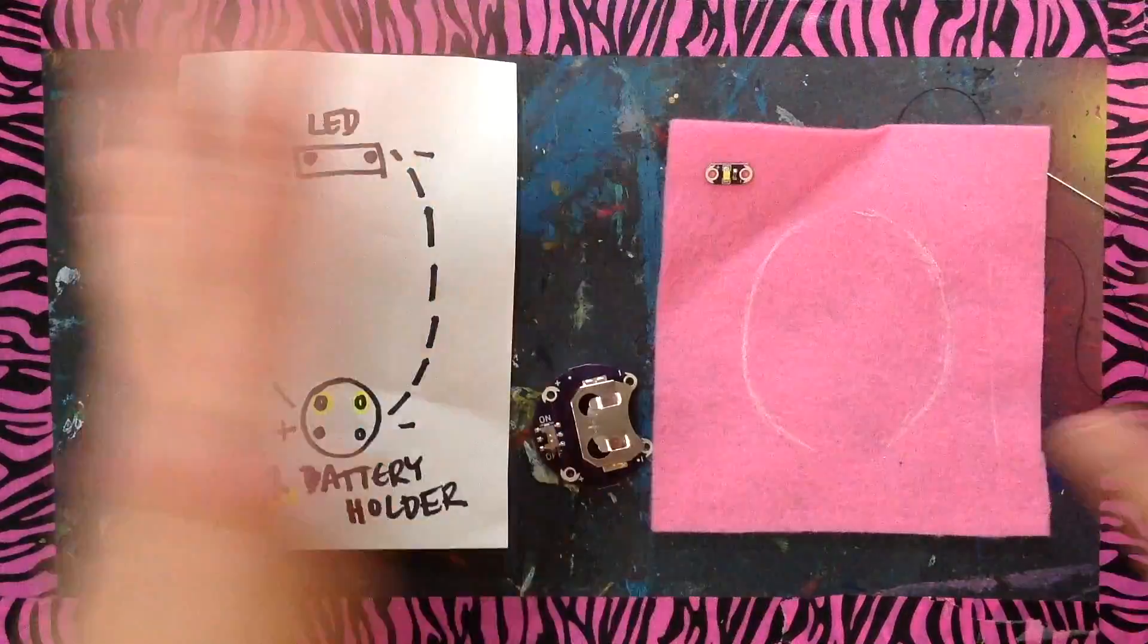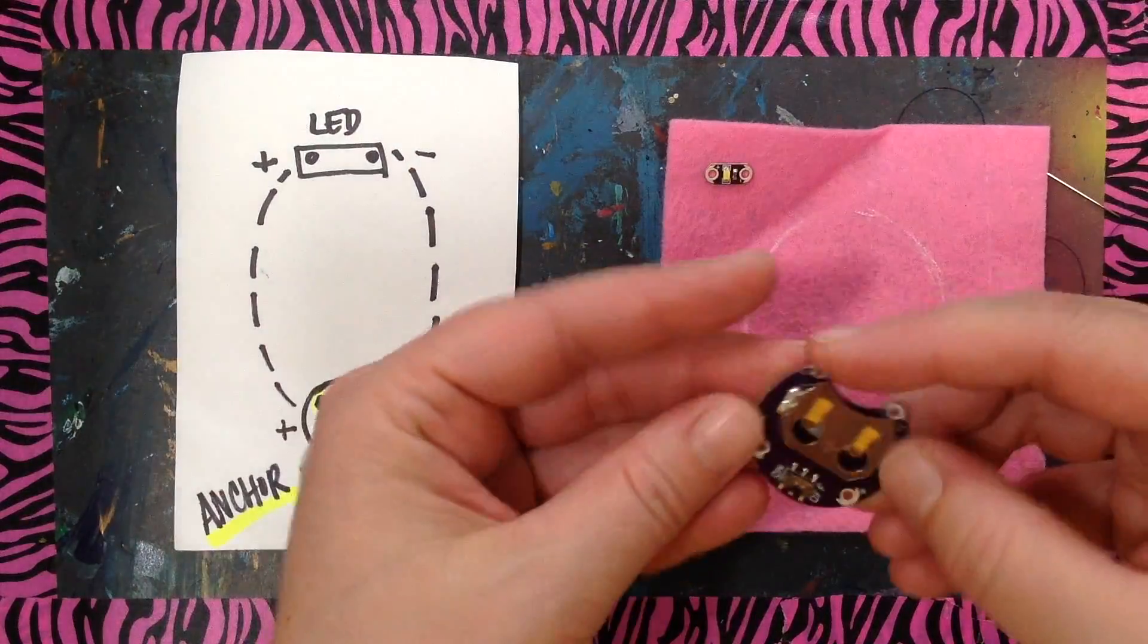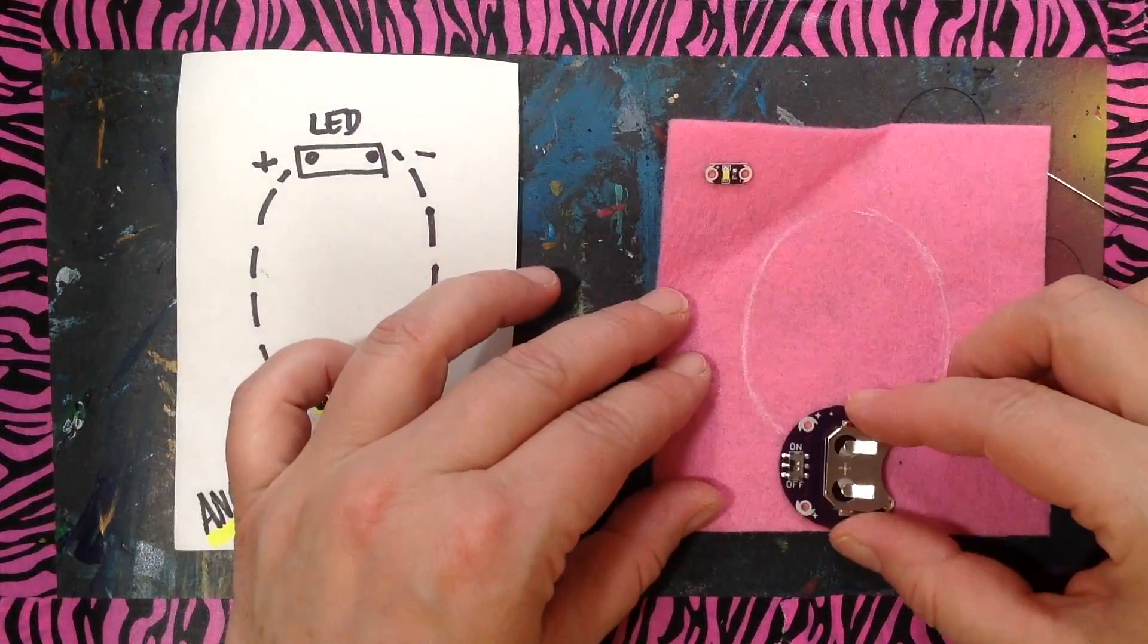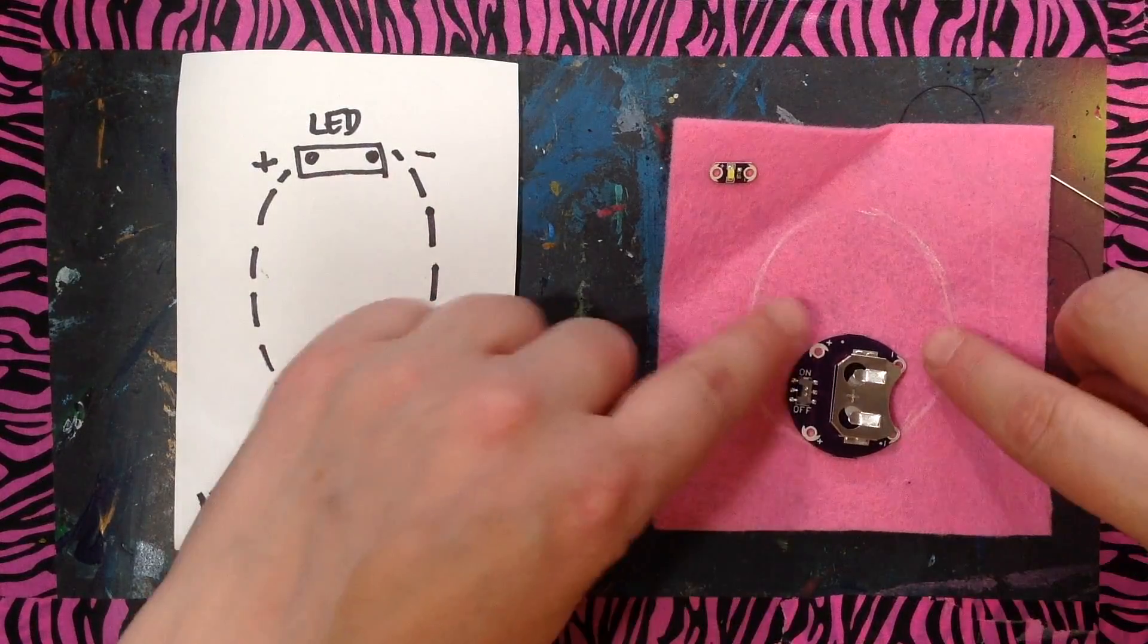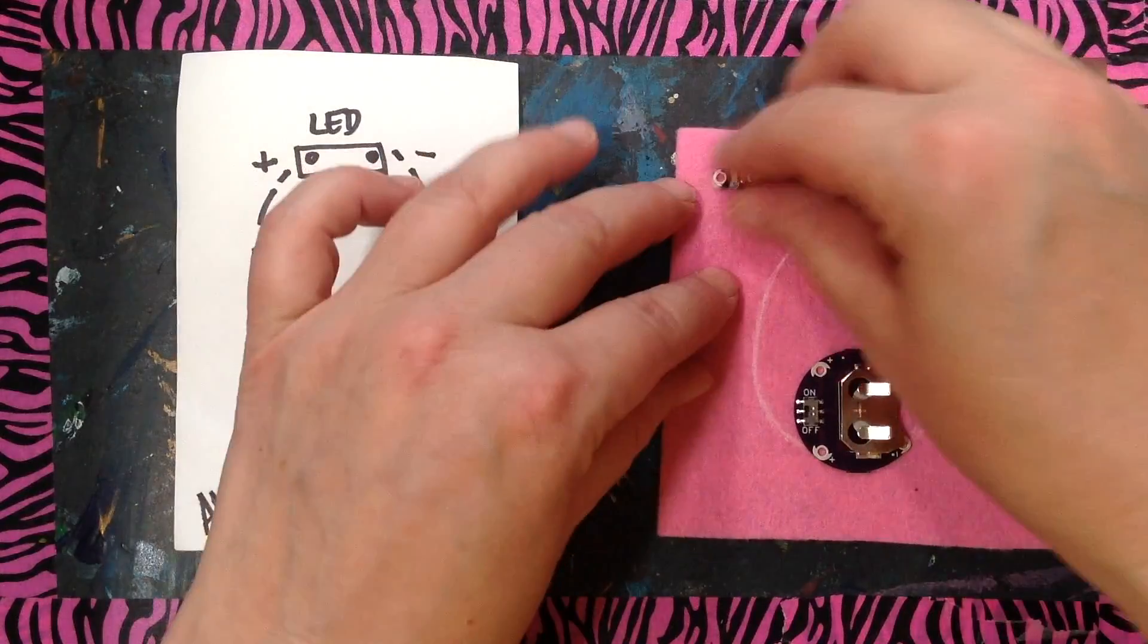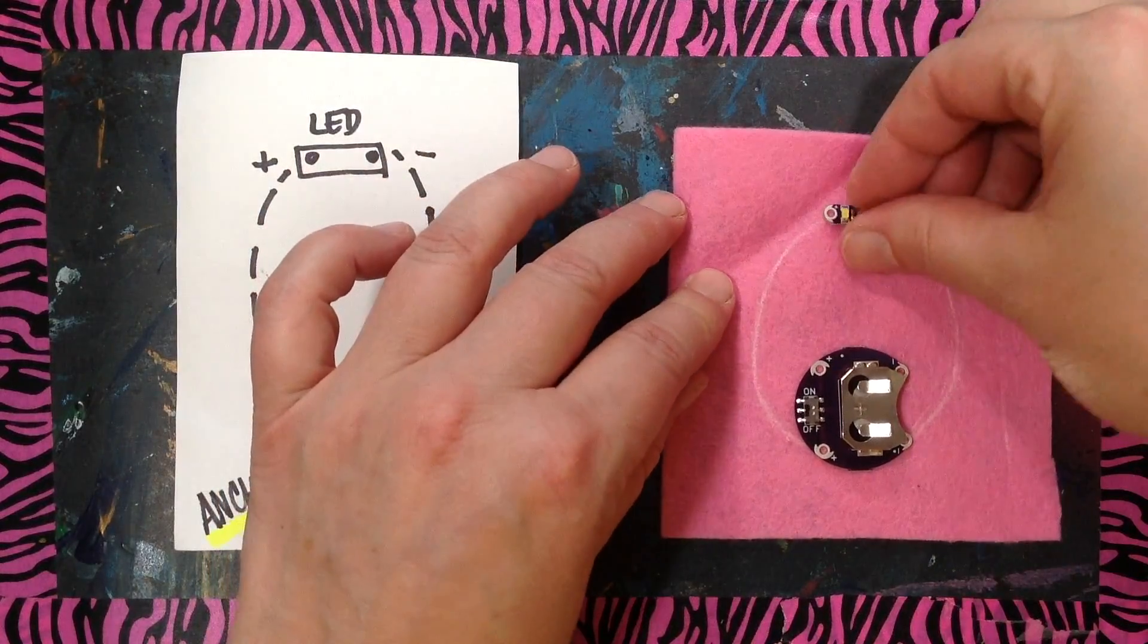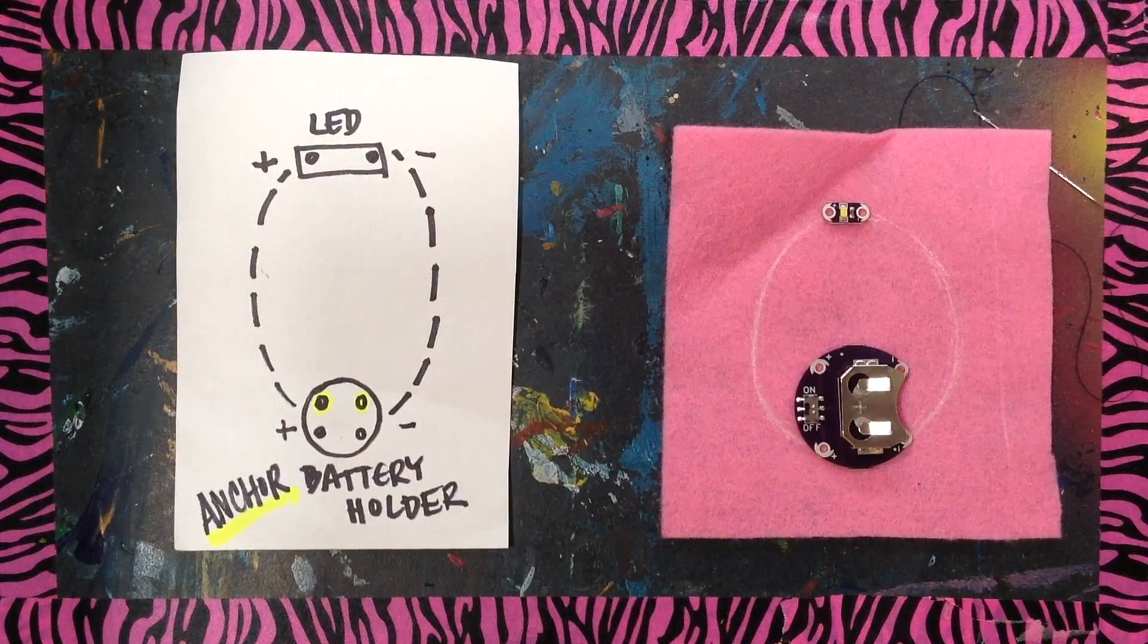These have to, they can't cross. So that's going to give you a short. So it's going to go like here. So these holes are for the circuit, these holes are for the anchor, and this one's going to go about here. So now I know where to anchor.